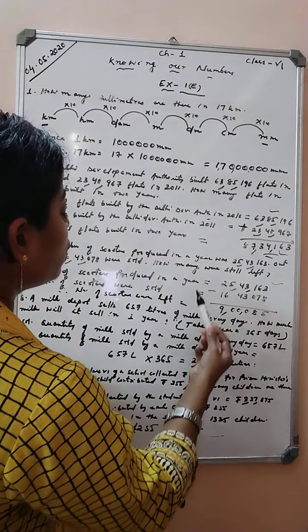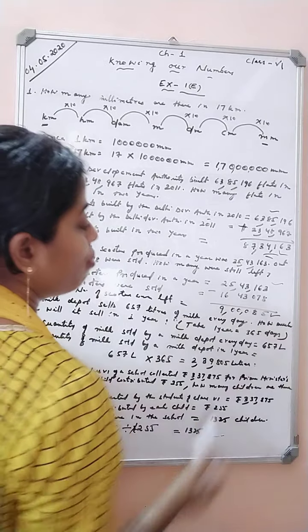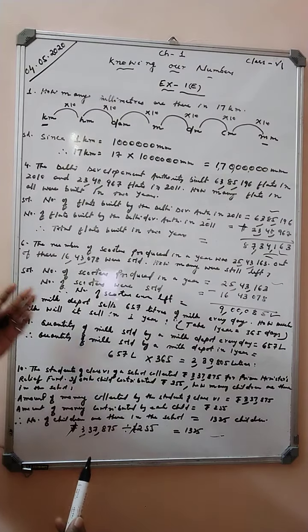The number of scooters left equals 9,85,000. Next question.